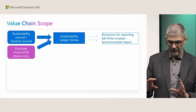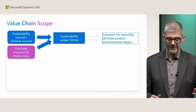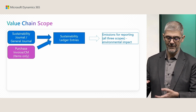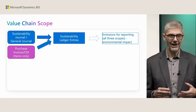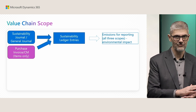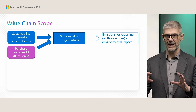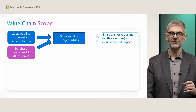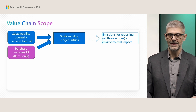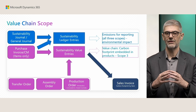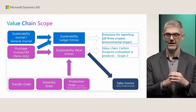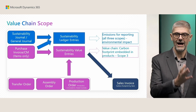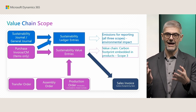Let's look at what Value Chain Scope is. Before we started with Value Chain, we had only sustainability ledger entries for final environmental impact reporting based to authorities, and we could report all entries coming from Sustainability Journal and from this Wave from General Journal and Purchase Invoices. But now from this Wave, we introduced new functionality related to Value Chain — sustainability value entry. This is very similar to existing value entries inside Business Central, but the difference is that value entry is related with item costs and sustainability value entry is related with item emissions.